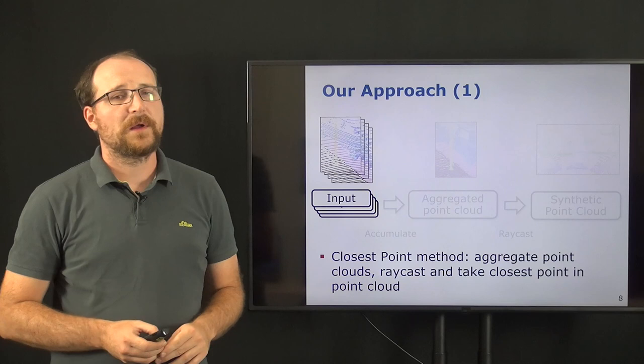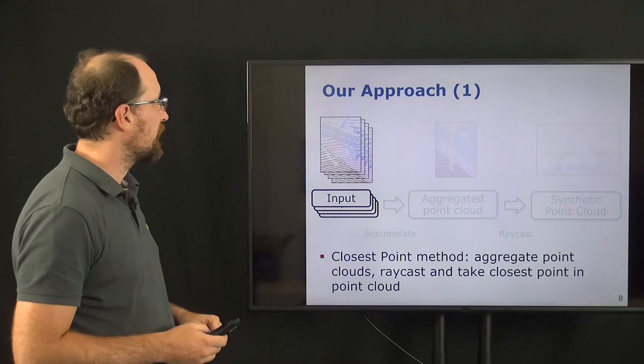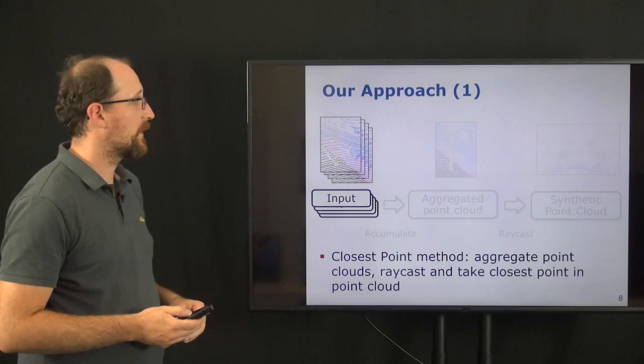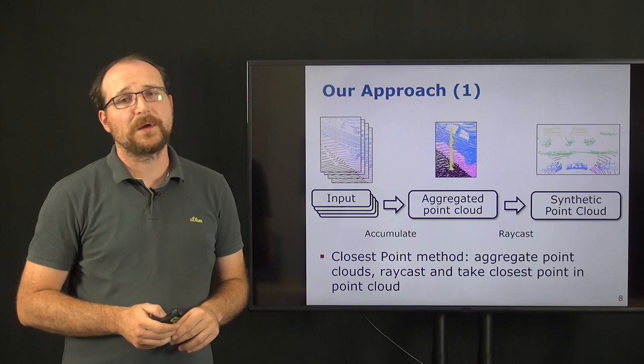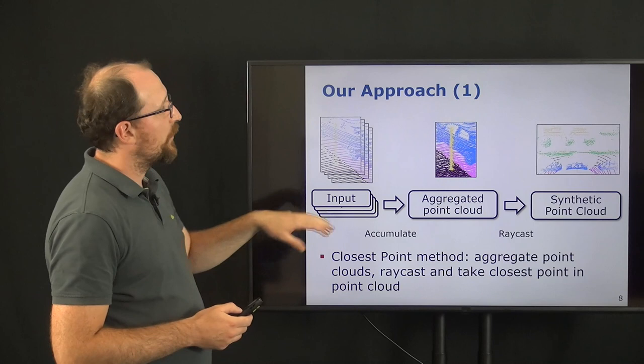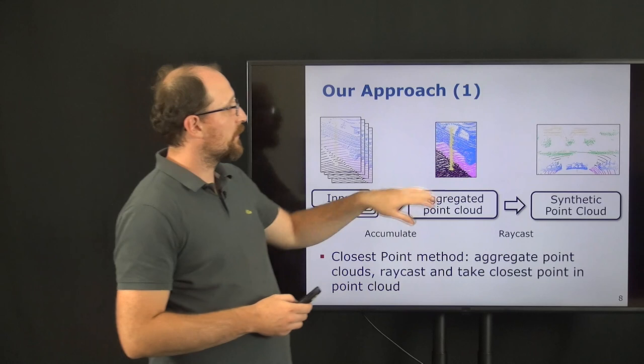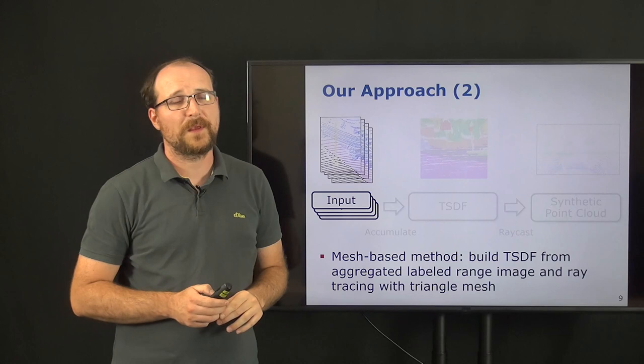Our approach is now that we take a sequence of point clouds, which we use from the KITTI dataset, which also provides us with pose information. And using this pose information, we can now aggregate the point cloud. This aggregated point cloud can then be used by ray casting to generate, using the sensor geometry of the target sensor, a point cloud that looks like it would be recorded by this target sensor, but retaining the label information from the original source dataset.